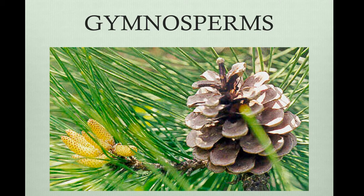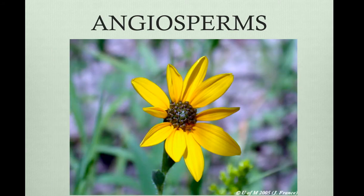Gymnosperms are considered naked seeds, and they are vascular plants. Most of them are cone-bearers, like pines and firs. There are about 721 known species. Angiosperms, which are the type of plants you're most familiar with and the most abundant, have seeds that are inside ovaries, which act as a protective chamber. They are flowering plants, and there are over 250,000 known species.